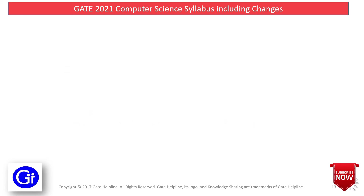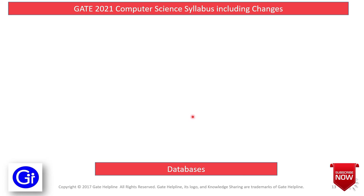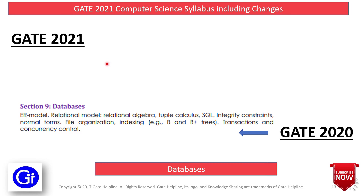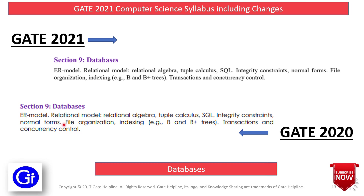The next subject is Databases. The GATE 2020 syllabus comprises ER Model, Relational Model, Relational Algebra, Tuple Calculus, SQL, Integrity Constraints, Normal Forms, File Organization, Indexing, B and B+ Trees, and Transactions and Concurrency Control. There is no major difference in the GATE 2021 syllabus, so no changes since GATE 2016.